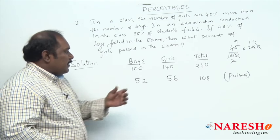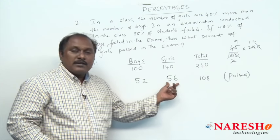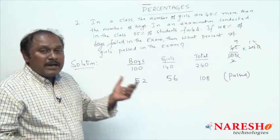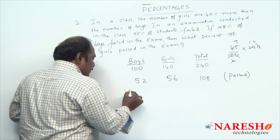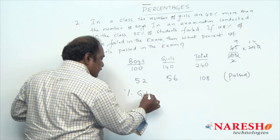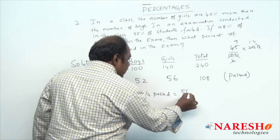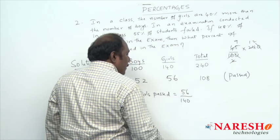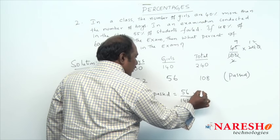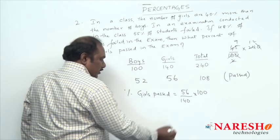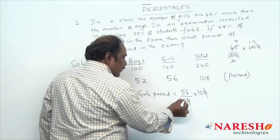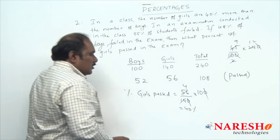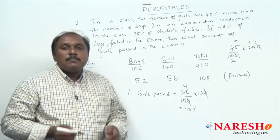The question asks what percent of girls passed in the exam. 56 girls passed out of 140 girls, so the percentage is 56/140 × 100. Cancelling: 56/14 = 4, times 10 = 40 percent. So 40 percent of girls passed in the exam.